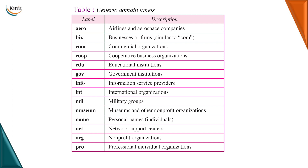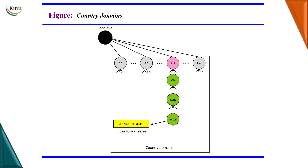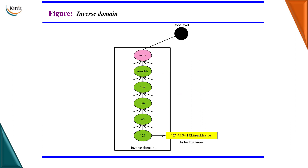Some examples of generic domain labels: .com means commercial organization, .info means information service providers, .net means network support centers, .org means non-profit organizations. Country domains are two-character codes for different countries. For inverse domain, for example, if I have the IP address 121.45.34.132 and I need the domain name, the domain name would be under address.arpa.